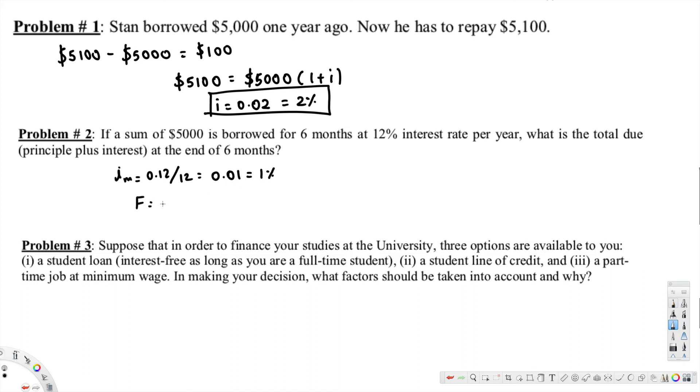And F is equal to P times (1 + i_m) to the power 6. P is the principal amount, that's $5000, so $5000 times (1 + 0.01) to the power 6, that's equal to...